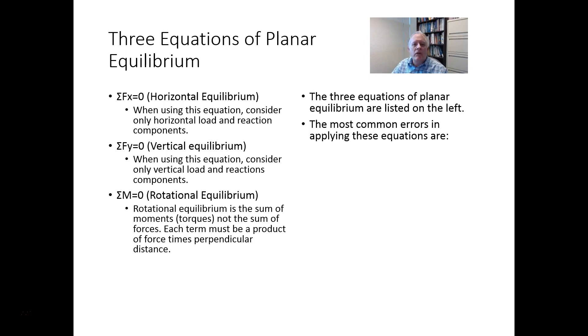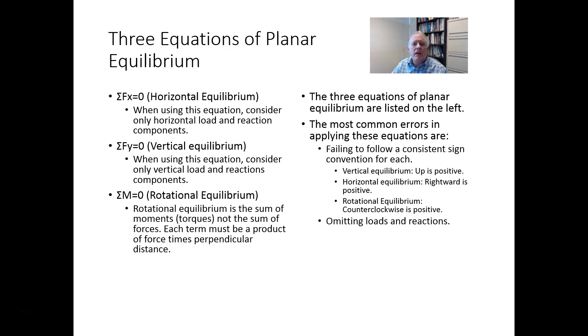The most common errors that you're going to run into in applying these equations are failing to follow a sign convention for each. So for vertical equilibrium, up is positive, down is negative. For horizontal equilibrium, right is positive, left is negative. For rotational equilibrium, counterclockwise, which is like steering a car left, would be positive. Clockwise would be negative. Another error that you might make is omitting loads and reactions. So make sure you count each part in each equation.